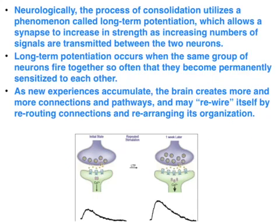A key aspect of consolidation is LTP — long-term potentiation — which refers to the long-lasting enhancement of synaptic transmission. The same group of neurons fire together so that they become permanently sensitized to each other, and the brain rewires itself by establishing new connections and rearranging its organization.